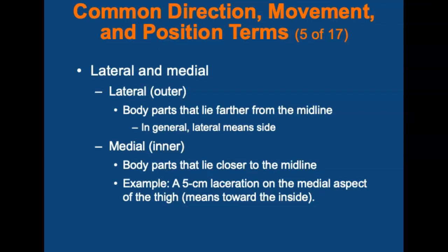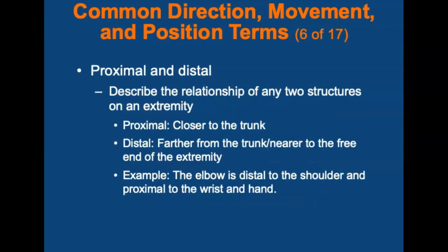Parts of the body that lie further from the midline are called lateral or outer structures — in general terms, lateral means side. Parts that lie closer to the midline are called medial or inner structures. For example, a patient has a 5 cm laceration on the medial aspect of the thigh, meaning towards the inside. The terms proximal and distal describe the relationship of two structures on an extremity. Proximal describes structures closer to the trunk, and distal describes structures farther from the trunk or nearer to the free end of the extremity. For example, the elbow is distal to the shoulder and proximal to the wrist and hand.